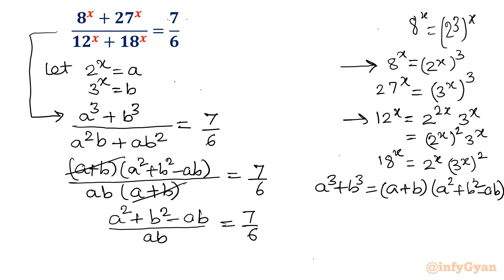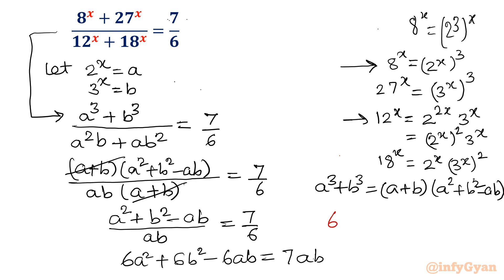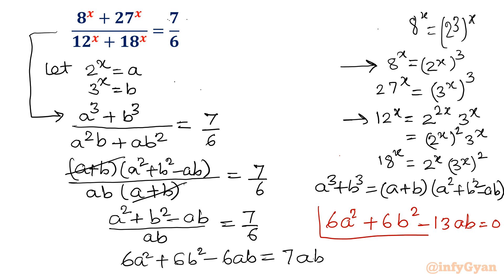Now cross multiply. That gives 6a squared plus 6b squared minus 6ab equal to 7ab. If we take away 7ab from both sides, the equation converts into 6a squared plus 6b squared minus 13ab equal to 0. This is our quadratic equation for which we will find the solution.